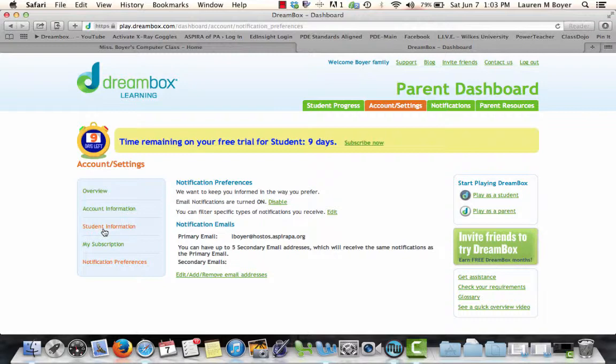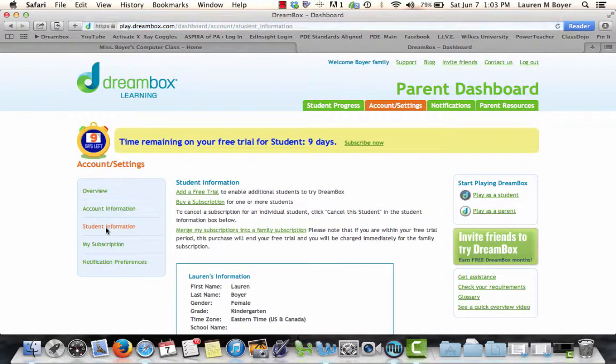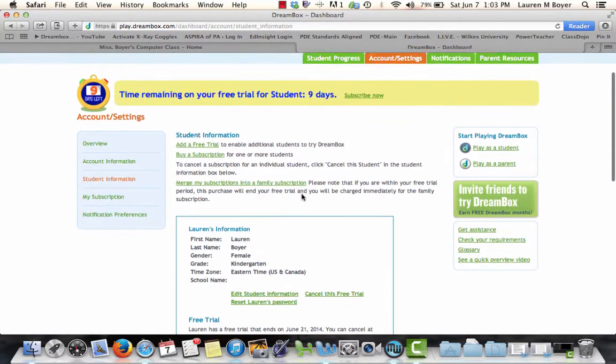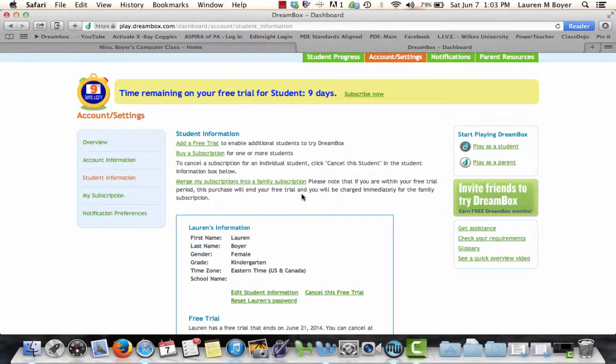Then you need to subscribe all your students. You're going to click on student information. You'll have a set number of students that you can set up. So what you need to do is mine says add a free trial. It will say add a student and you will just type in the student's first and last name.